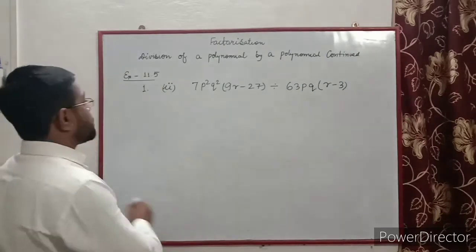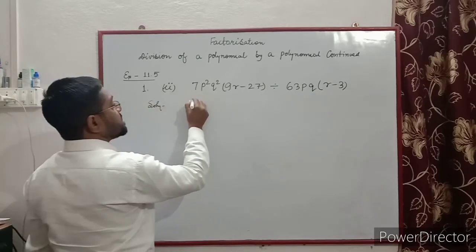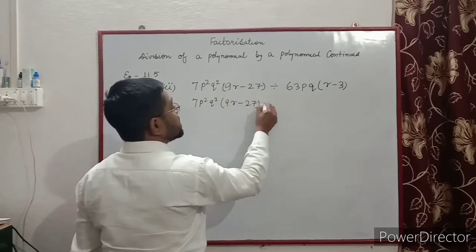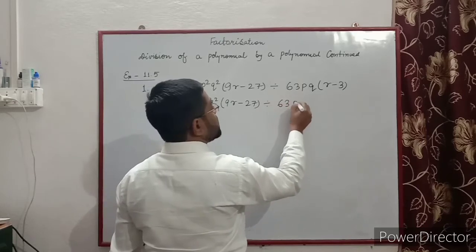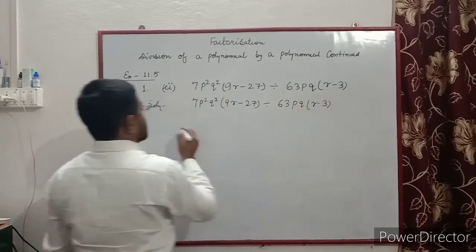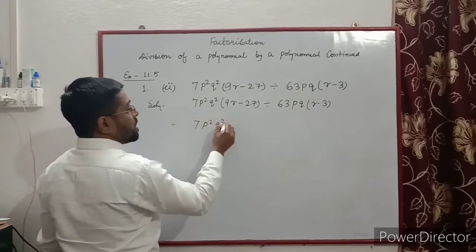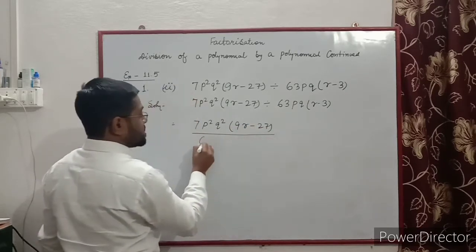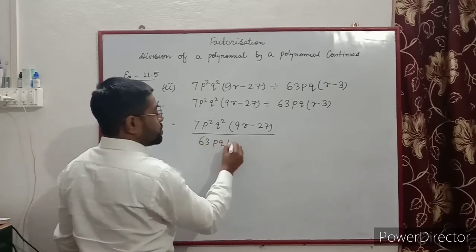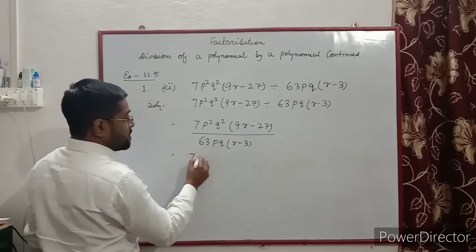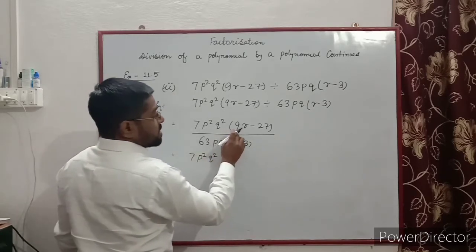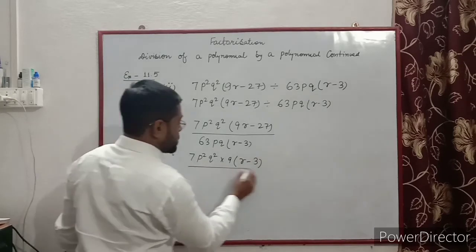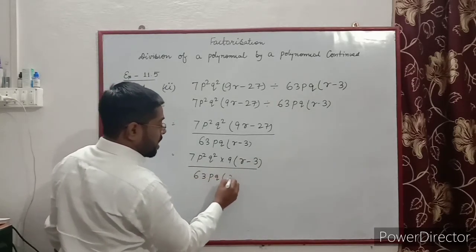First of all, we have to write here the solution: 7p²q² multiplied by (9r − 27), divided by 63p³ into (r − 3). So we can write 7p²q² multiplied by (9r − 27), divided by 63p³ into (r − 3). Now 9 will be common in (9r − 27), giving 9(r − 3).